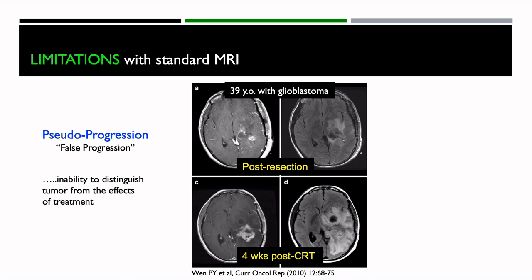There are limitations with standard MRI — one that's become quite well known is called pseudoprogression, which stands for false progression. It basically describes the inability to distinguish tumor from the effects of treatment. For example, here's a 39-year-old with a glioblastoma, immediately after surgery. Four weeks later, after chemo-radiation therapy, it looks like things are getting worse — the enhancement is increasing and the area of FLAIR signal showing edema is also increasing, suggesting possible tumor progression. However, when this person went back to surgery and this area was removed, it was mostly necrosis — clearly not progressing tumor but rather treatment effect. This was a clear case of pseudoprogression.